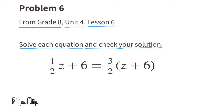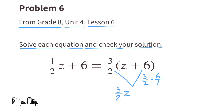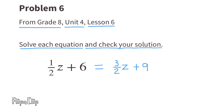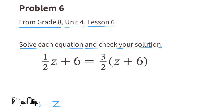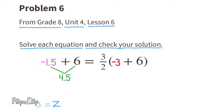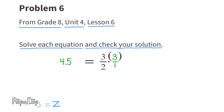Use the distributive property: 3 halves times Z is 3 halves Z, and 3 halves times positive 6 is positive 9. Subtract 1 half Z from both sides to get 6 equals 1Z plus 9. Subtract 9 from both sides to get negative 3 equals Z. Check: substituting Z equals negative 3, 1 half of negative 3 is negative 1.5, and 6 minus 1.5 is 4.5. On the other side, 3 halves times 3 is 9 halves, and 9 divided by 2 is 4.5. So 4.5 equals 4.5 — solution confirmed.